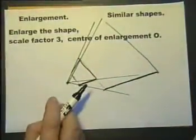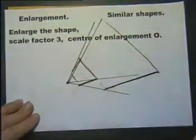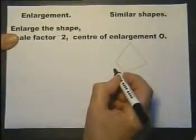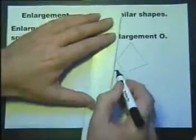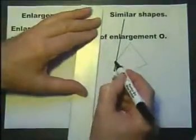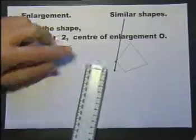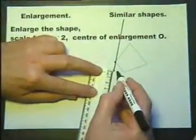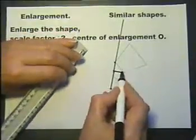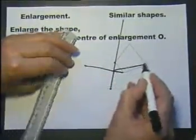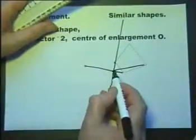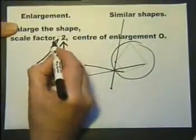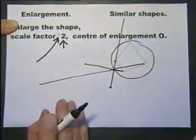For an enlargement you need a scale factor and a center of enlargement. If you have a negative scale factor — say negative two — with a center of enlargement here, you draw your radiating lines, but when you measure the distance you multiply by the scale factor and measure in the opposite direction. So if that was one and a half centimeters, you'd measure back three centimeters; if the distance was two centimeters, you'd measure back six centimeters. What you get is a shape where all the sides are twice as long, but the negative has the effect of turning it upside down — or inverting it, which is the proper term.